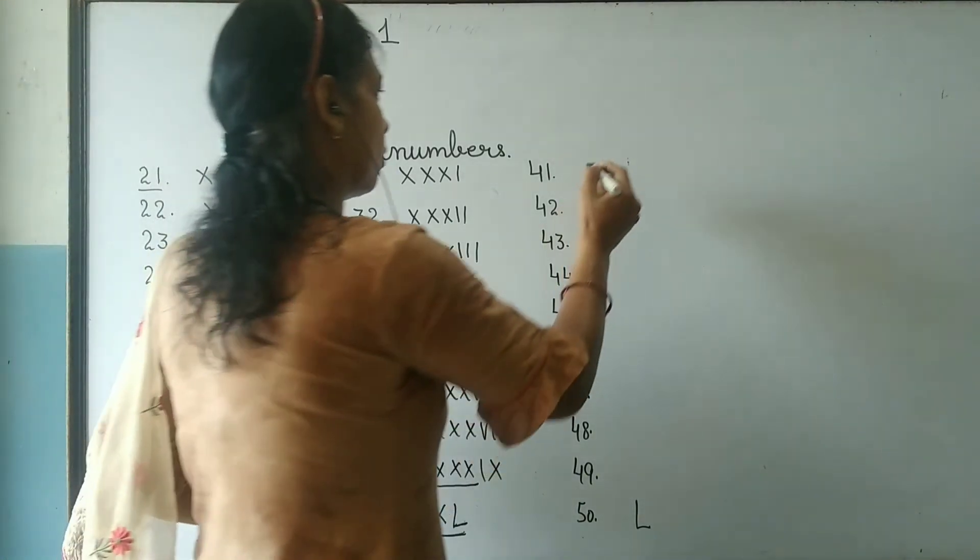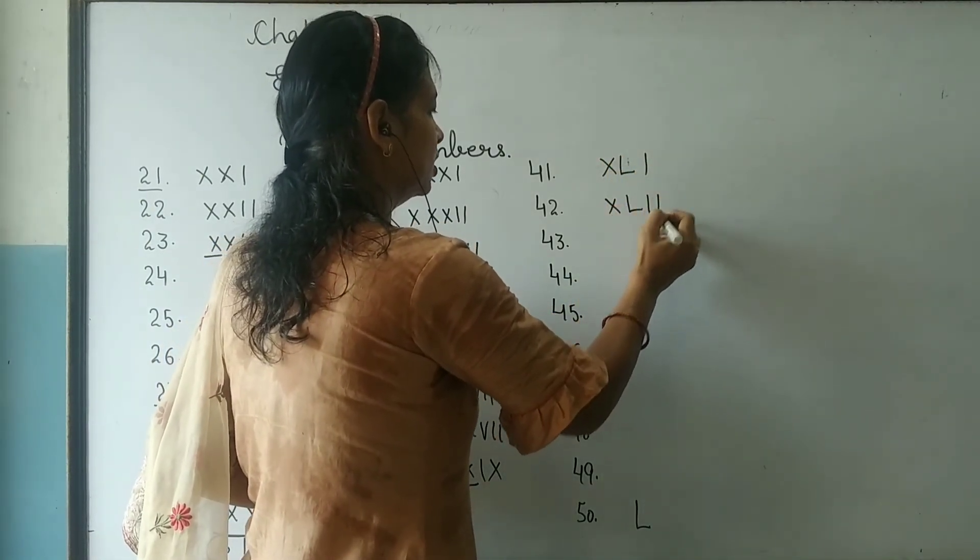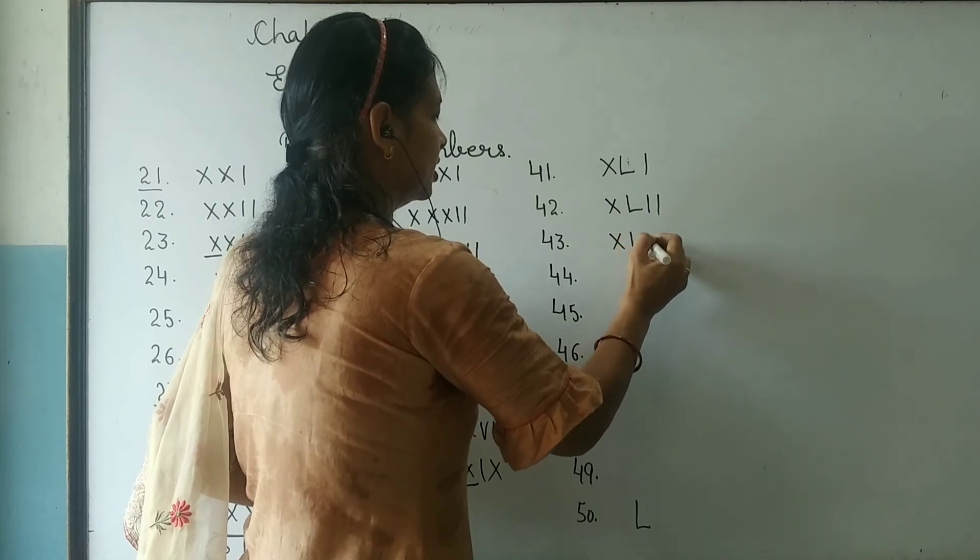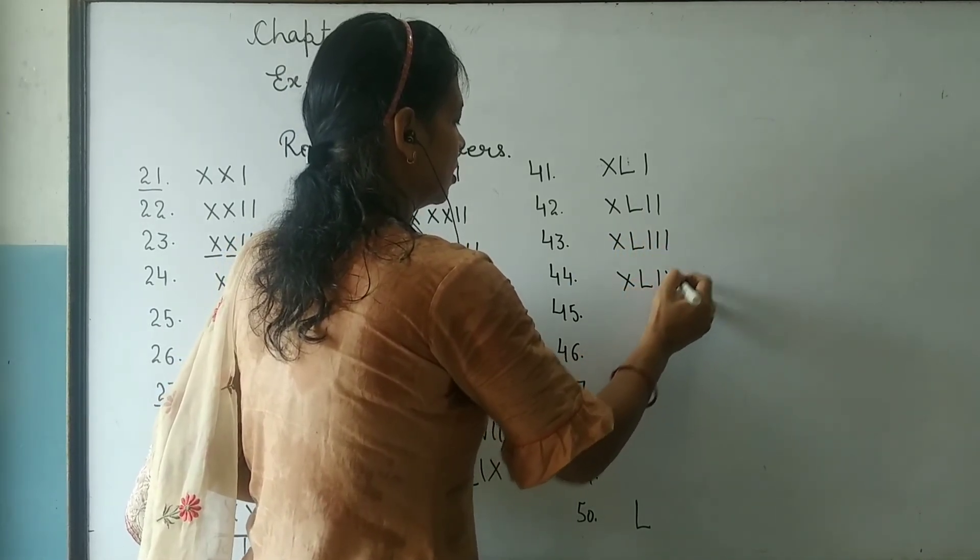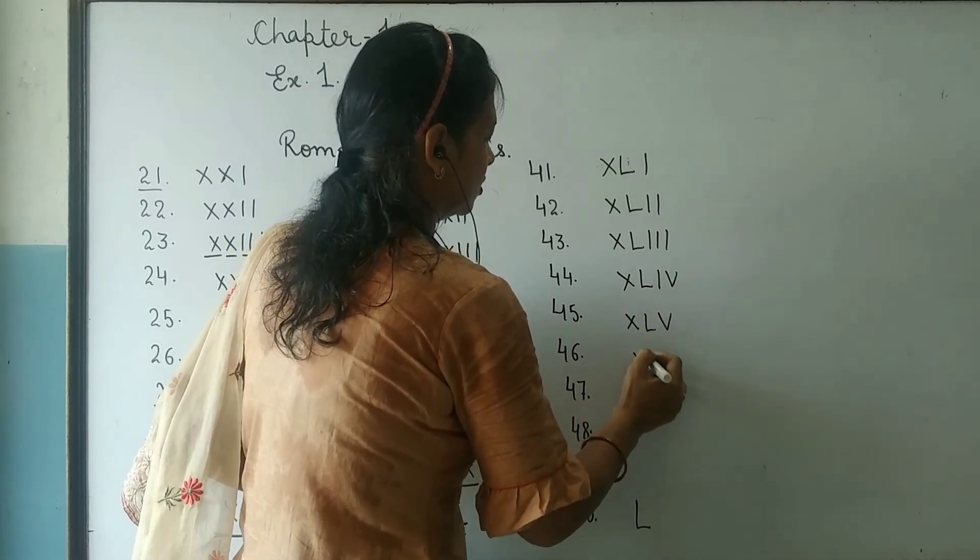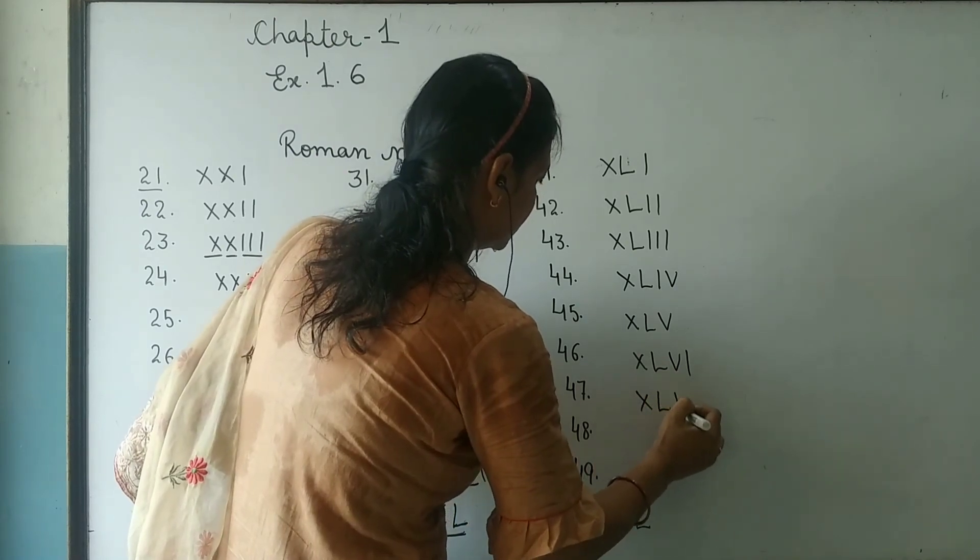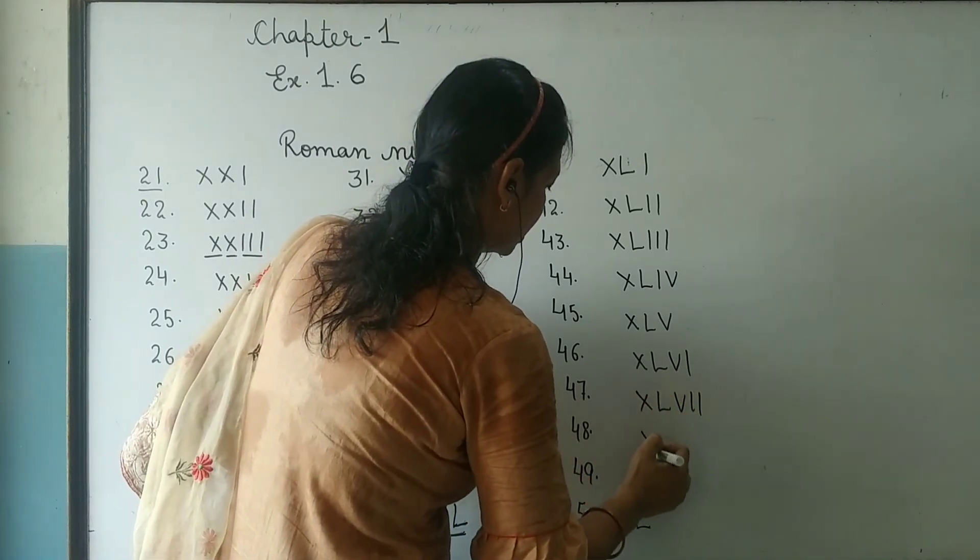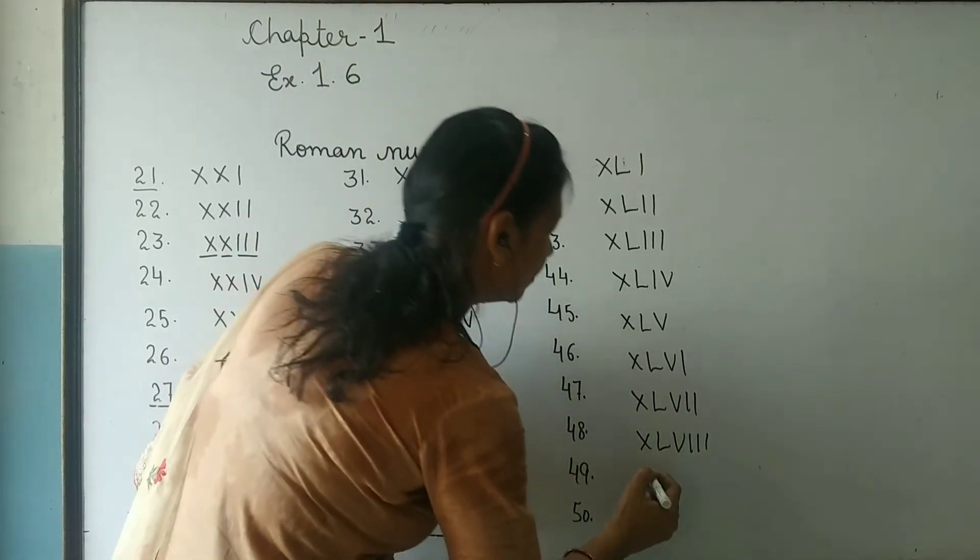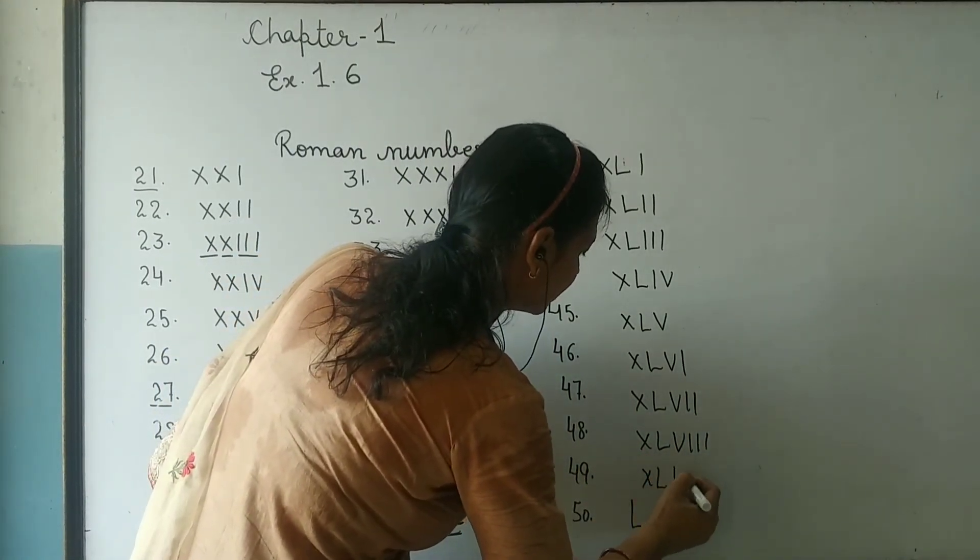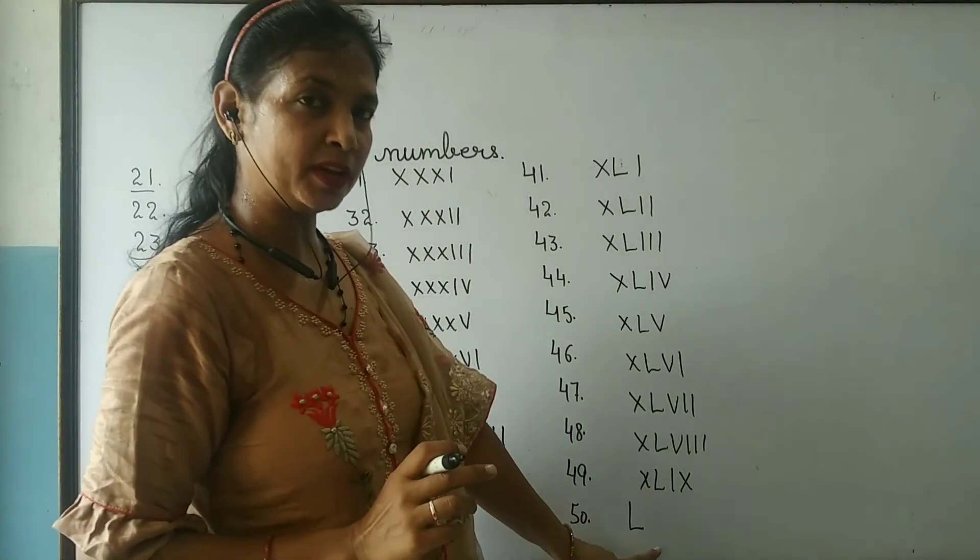Now 41, 42, 43, 44, 45, 46, 47, 48, 49. You continue writing these in sequence using XL for 40 and adding I, II, III, and so on.